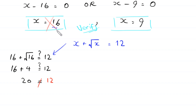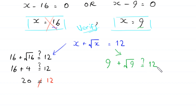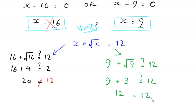When x equals 9, the equation becomes 9 plus root 9 equals 9 plus 3, which is 12. You can see that the left hand side equals the right hand side. It means that x equals 9 is a valid solution.